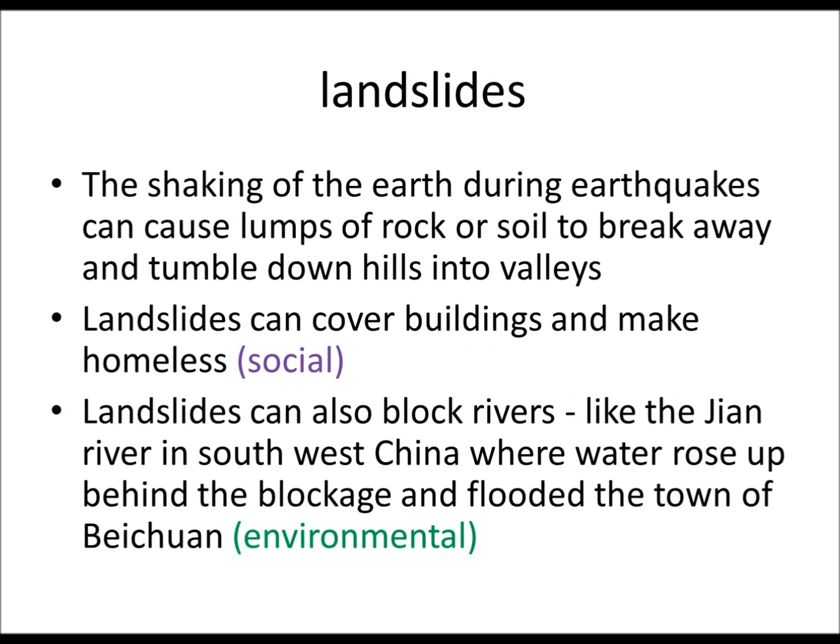Landslides. The shaking of the earth during the earthquake can cause lumps of rock or soil to break away and tumble down hills under the force of gravity. These can cover buildings, again making people homeless or jobless. Landslides can also block rivers, like the Jiang River in southwest China, where the water rose up behind the blockage and ended up flooding the town of Bitachan.